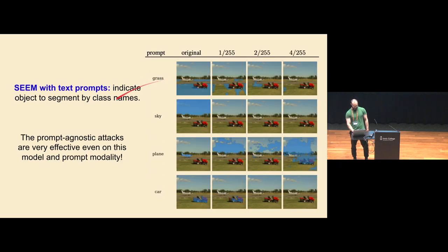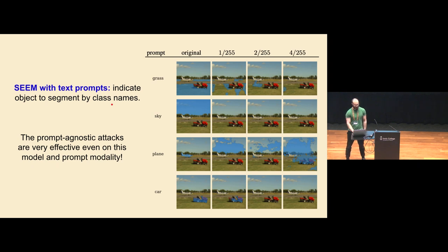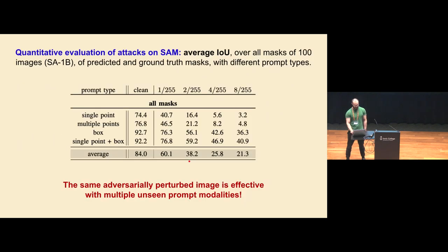This is an example with SEEM using text prompts, where you just give the name of what you want segmented — like grass, sky, and so on. We see that even in this case, on another model and another prompt modality, the results are pretty similar. In some cases the mask doesn't disappear but the model predicts something completely random that has nothing to do with the target object.